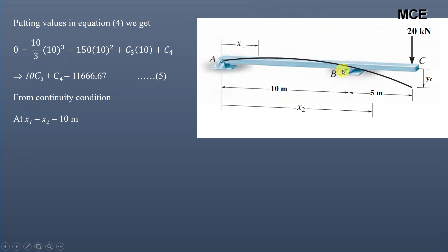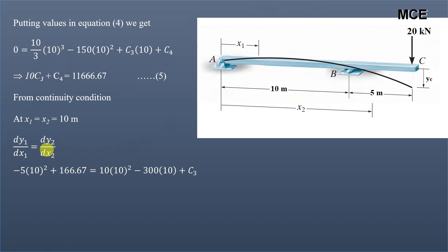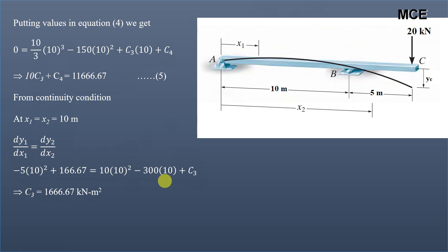There is also a continuity condition: the slope at B must be the same from both sides, so dy1/dx1 = dy2/dx2 at x1 = x2 = 10 m. Substituting x1 = 10 in equation 1 and x2 = 10 in equation 3 gives: −5(100) + 166.67 = 10(100) − 300(10) + C3. Solving this gives C3 = 1666.67 kN·m².